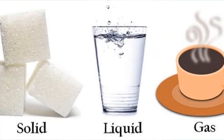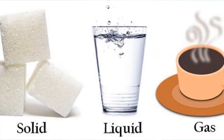We know that matter exists in three different states or three different forms. The three different forms of matter are: one is solid, one is liquid, and one is gas. These are the three different states of matter.